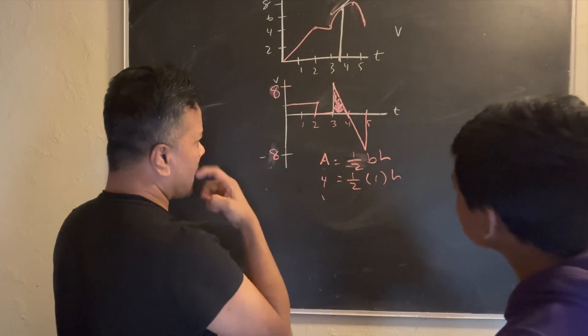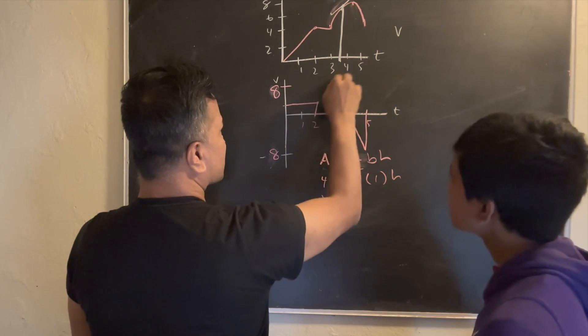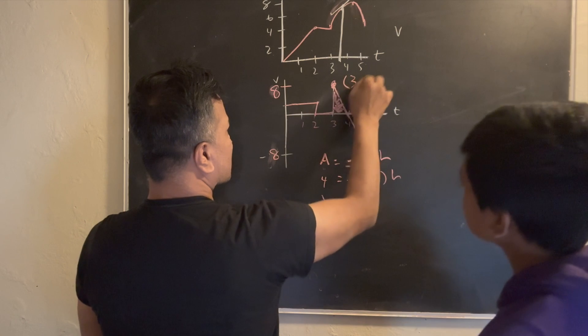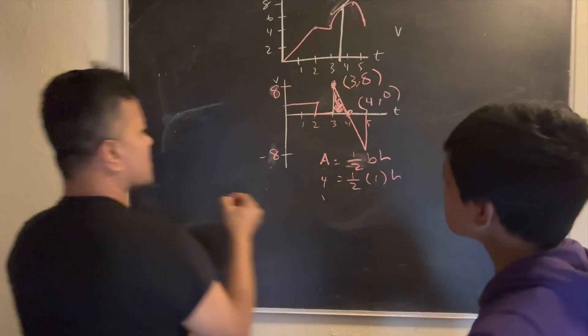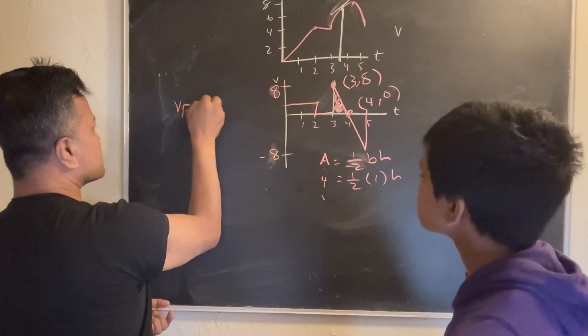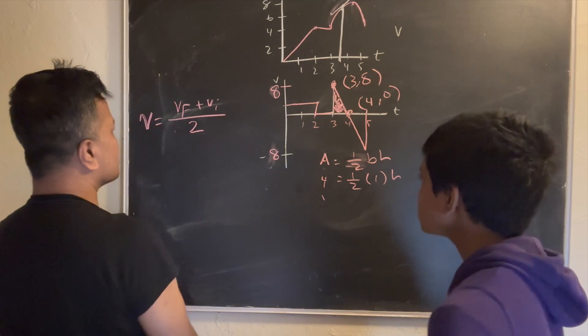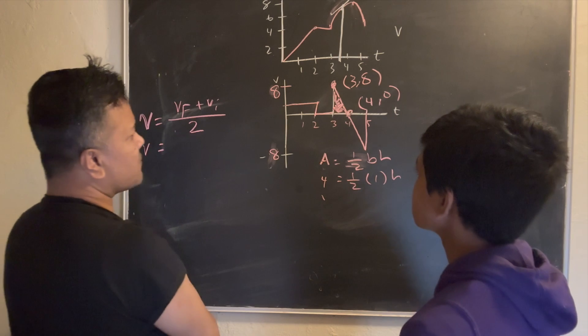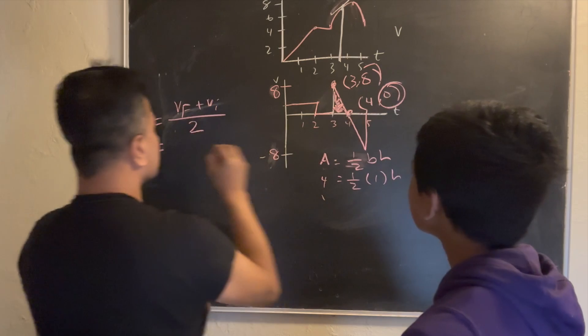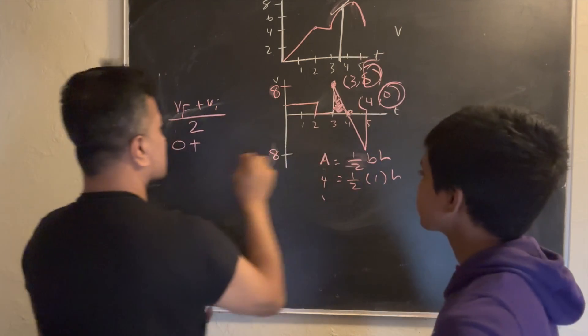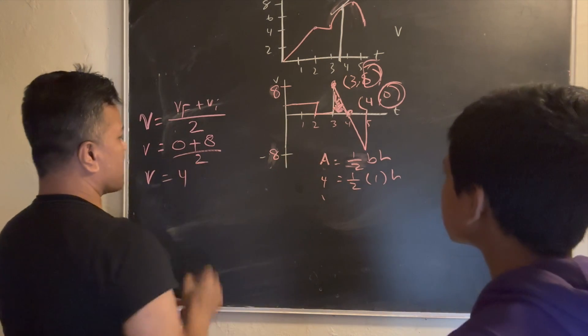So now I'm going to solve this way. What is the point over here? That's 3 comma 8. And what is the point over here? That is 4 comma 0. So I'm going to use VF plus VI over 2. This is how I'm going to find the velocity. So velocity is VF. What is VF? VF is 0. And VI is 8. Divide by 2. So velocity is 4.